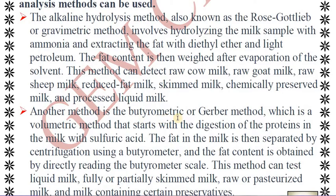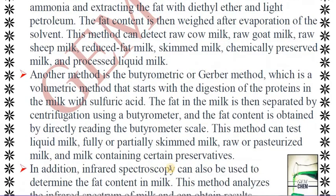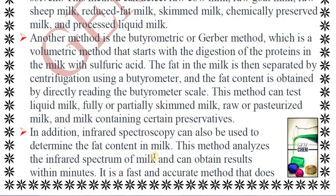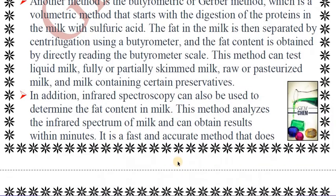The second method is the butyrometric method or Gerber method, which is a volumetric approach. It starts with digestion of the protein in the milk using sulfuric acid, then the fat is separated out by centrifugation carried out in a butyrometer, and the fat content is directly read from the butyrometer scale. This method tests liquid milk, fully or partially skimmed milk, and pasteurized milk. Infrared spectroscopy is also used to determine fat content in milk and gives results within minutes.